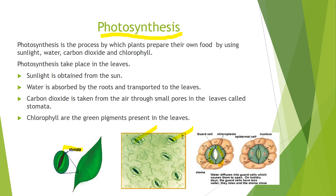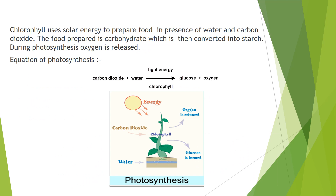Now how does photosynthesis take place in the leaves? The sunlight is absorbed by the green pigment present in the leaves called chlorophyll. Chlorophyll absorbs sunlight, then water is absorbed through the roots, and carbon dioxide is taken from the air through the stomata. In photosynthesis, carbon dioxide and water combine in presence of chlorophyll and sunlight to form carbohydrates. Chlorophyll utilizes solar energy and carbohydrates are formed, which are later converted into starch.